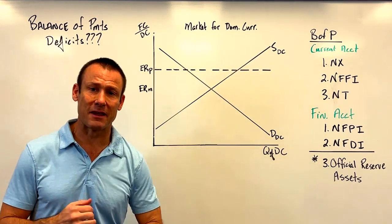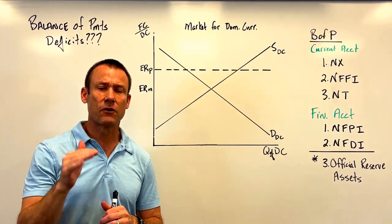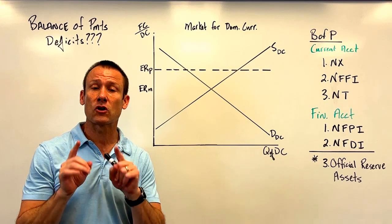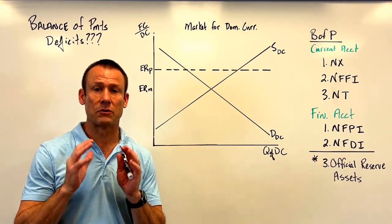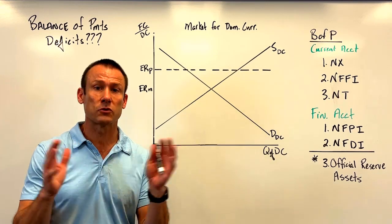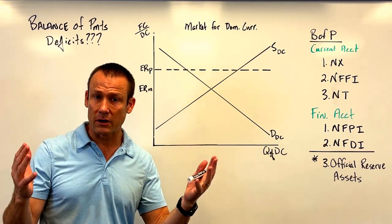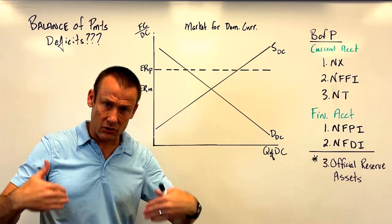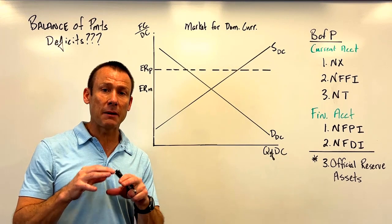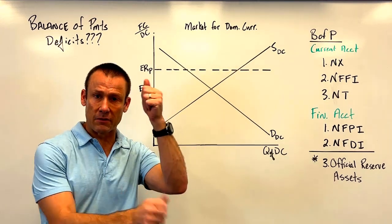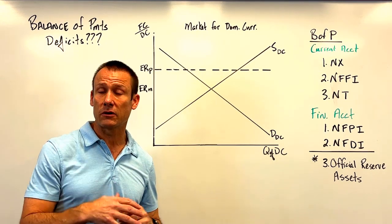Here's what we're doing: we are talking about a balance of payments deficit — and as you can see I put question mark, question mark, question mark. First of all, I am not talking about a current account deficit. Current account deficits are very common. The United States has been running a current account deficit for almost my entire life. If you have a current account deficit, that means you've got surpluses in your other accounts. I'm going to mainly focus on the current account and the financial account — those are the two major accounts of the balance of payments. There is another account